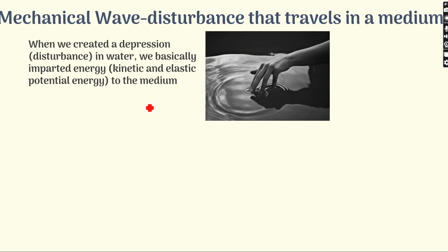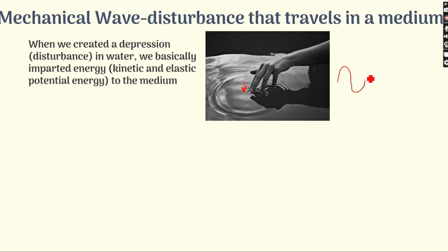Mechanical waves require a material medium when traveling forward. Taking the still water example again — when my finger is dipped, it pushes the water downward, creating a disturbance. I am applying energy to these water particles and pushing them down. My work done gets converted into energy stored in the water particle. With this restoring energy, the water particle comes back to its original form once I release my finger. So the medium is elastic, and because of that elasticity, it restores its original form and gives energy to the neighboring particle.